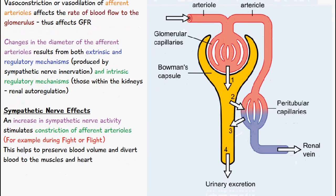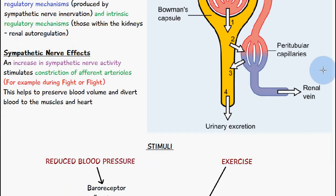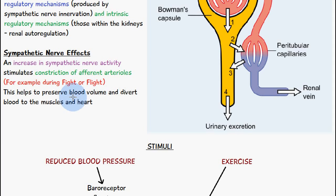So let's first talk about the sympathetic nerve effects. An increase in sympathetic nerve activity stimulates the constriction of afferent arterioles. When I say an increase in sympathetic nerve activity, I'm talking about for example the fight-or-flight mechanism — something which is going to increase the blood pressure. We'll have constriction of the afferent arterioles, and what this does is it helps to preserve the blood volume and divert blood to the muscles and the heart where it's required the most.